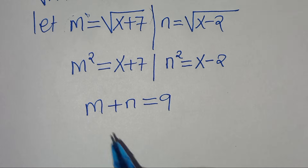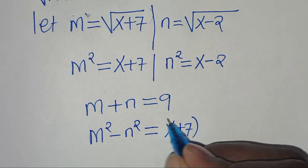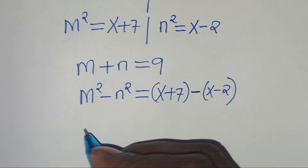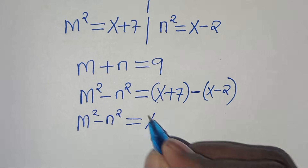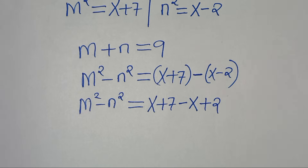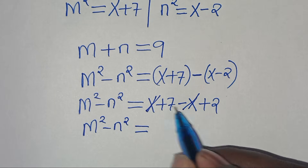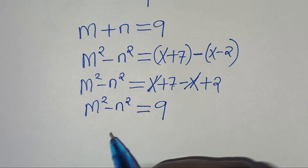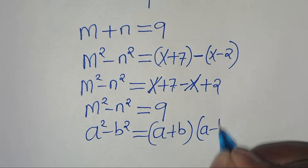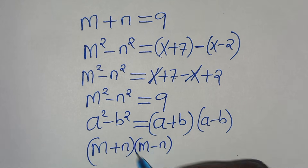Now we have m squared minus n squared, which equals (x+7) minus (x-2). Simplifying: x minus x cancels, and 7 plus 2 gives us 9. So m squared minus n squared equals 9. Using the difference of two perfect squares, m squared minus n squared factors as (m+n)(m-n), so (m+n)(m-n) equals 9.